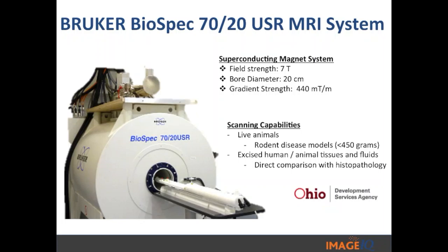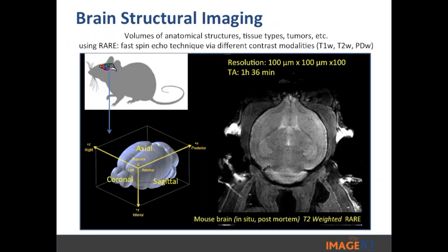Let's start looking at some images — because at the end of the day we're about imaging. Over the next few slides I'll show some basic structural imaging done over the last few months since acquiring the system. Here is a mouse brain done post-mortem — a T2-weighted RARE image done at high resolution in three dimensions: 100 microns by 100 microns by 100 microns, showing all the different features of the brain beautifully. However, it took an hour and 36 minutes. You wouldn't recommend a new user start off doing something like this.